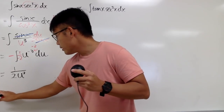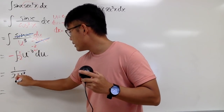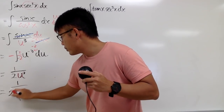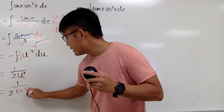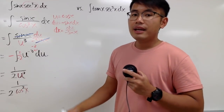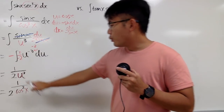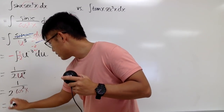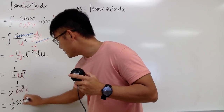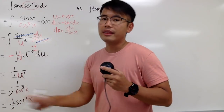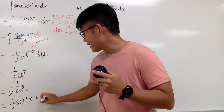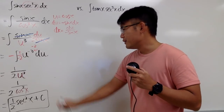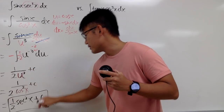We can write u to the negative 2 as 1 over u squared in the denominator. Substituting cosine x back for u, we get 1 over 2 times cosine squared x. If you like, you can write 1 over cosine squared x as secant squared x, so the final answer is one-half secant squared x plus C. I usually put the plus C at the very end.